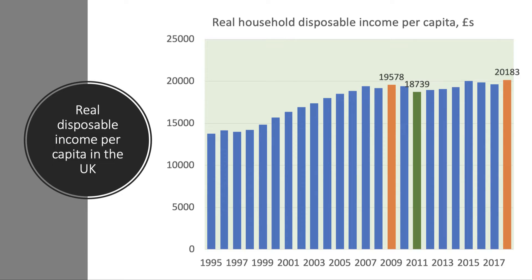This chart shows real household disposable incomes per capita from 1995 through to 2018. Per capita incomes grew quite strongly from 2000 through to 2007 — the economy was doing particularly well then — but following the financial crisis and the recession, they have struggled to improve in real terms. In fact, from 2009 through to 2018, per capita incomes adjusted for inflation increased by only 3.1%, as shown by the data labels.